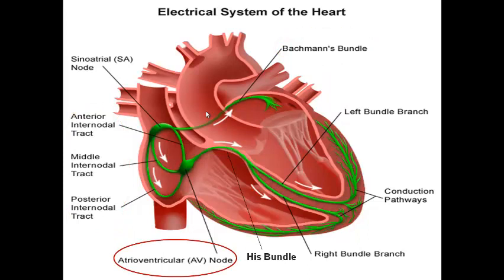The AV node is a subendocardial structure in the right atrium, which makes it vulnerable to iatrogenic block during EP studies. It transmits electricity from the atrium to the ventricle. From the AV node arises the His bundle, which penetrates the AV ring — the only electrical connection between atria and ventricles, since the fibrous AV ring acts as an electrical insulator. The His bundle is the only electrical pathway for impulse transmission from atrium to ventricle in normal hearts.